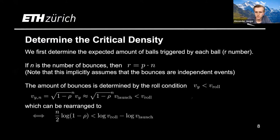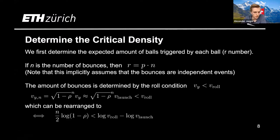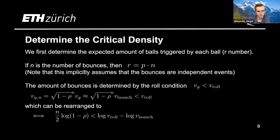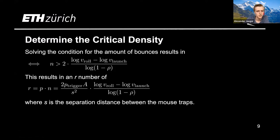The termination condition is that the vertical velocity falls below the rolling velocity, giving the expression (1 minus rho)^(1/2) to the power of N. Rearranging, we get a condition for N — the number of bounces. Here we've assumed Vy to be approximately V-launch, which is valid when the standard deviation is small (e.g., 0.1 or 0.2 radians), meaning Vy is usually around 99% of the initial velocity. We can then rearrange to find an expression for N.